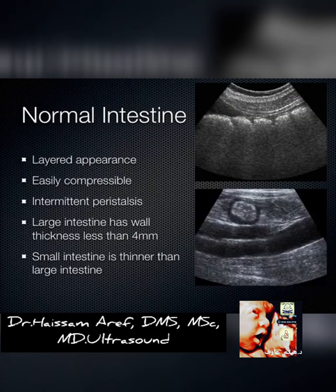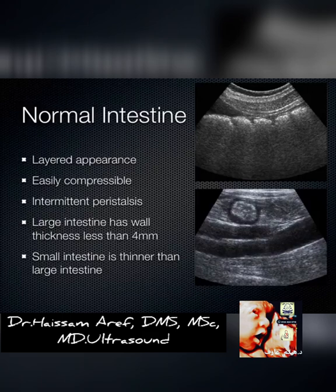Normal intestine shows a layered appearance and is easily compressible. When you compress loops of bowel they just squirt closed — no problem. They peristalse every 10 to 20 seconds. With disease states of the bowel you can see hyperperistalsis initially, and then eventually aperistalsis, or no movement at all.